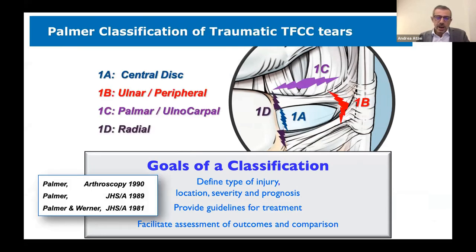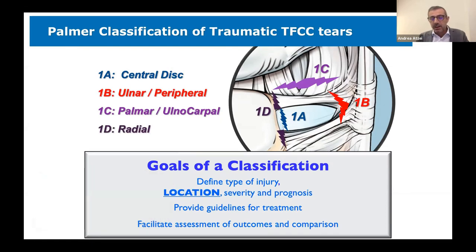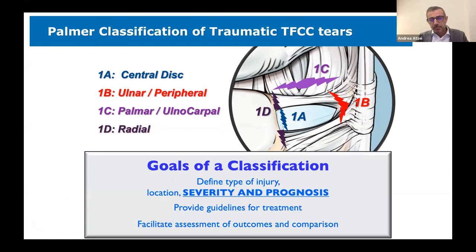The Palmer classification was described in the 1990s. It is a very nice classification that defines the location of injuries in the different aspects of the TFCC complex — we must recall that the triangular fibrocartilage is actually a complex of tissues in a small space. However, it probably lacks in describing the severity and prognosis, so it can likely be improved.